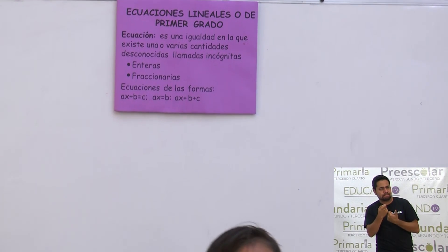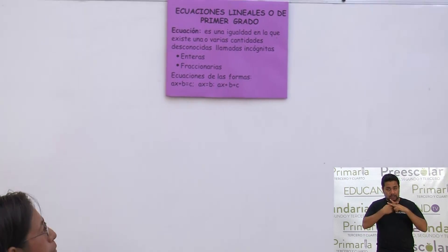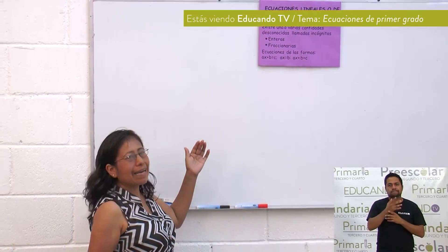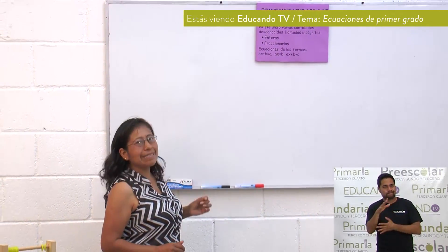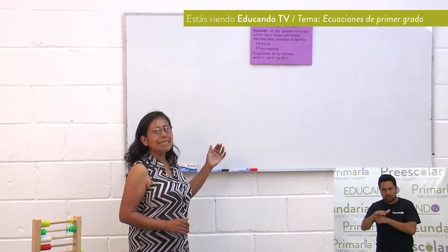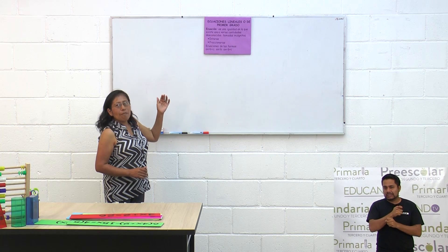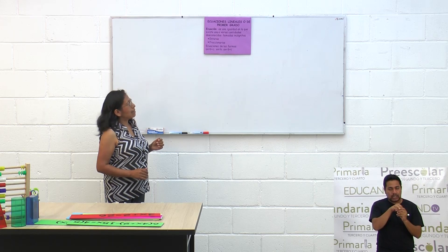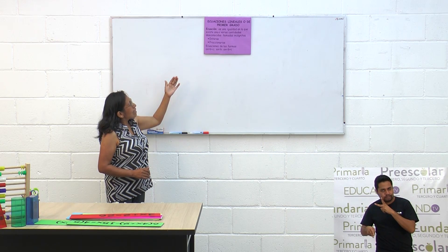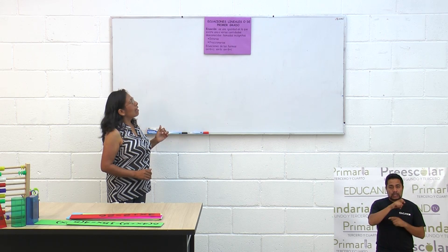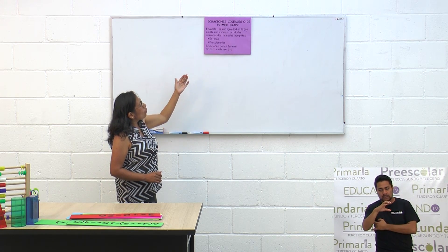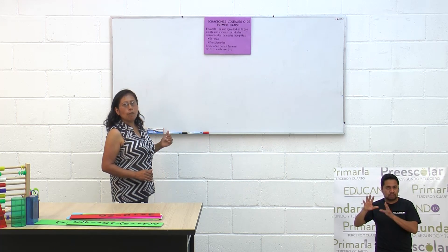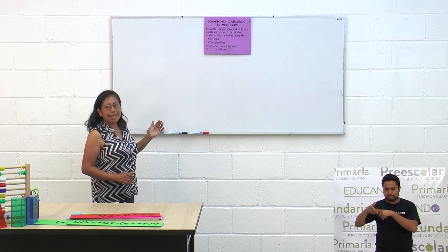Bueno, vamos a iniciar con el concepto de ecuación. Una ecuación es una igualdad en la que existe una o varias cantidades desconocidas llamadas incógnitas. Puede haber ecuaciones enteras y puede haber ecuaciones fraccionarias. Hay ecuaciones de las formas AX más B igual con C, AX igual con B y AX más B más C. Ahora vamos a abordar ecuaciones lineales o de primer grado.